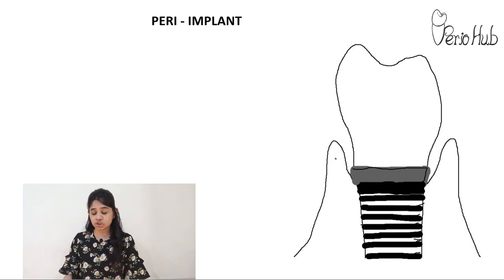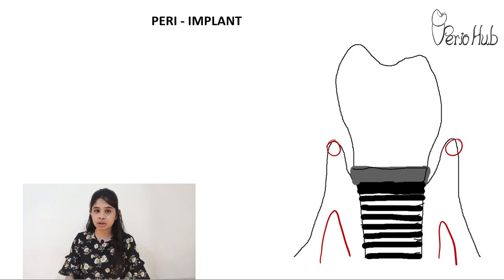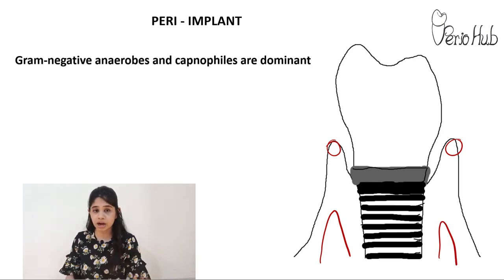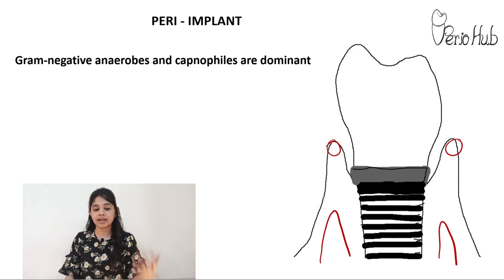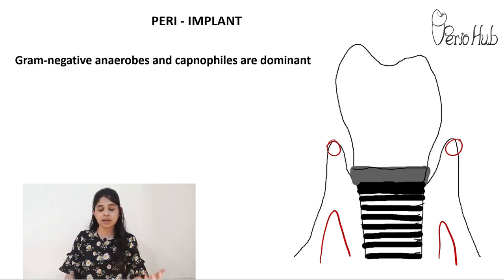Coming to peri-implant conditions: these are conditions wherein there is inflammation of the soft tissue associated with the implant along with destruction of the alveolar bone. Very similar to chronic periodontitis, peri-implantitis is dominated by gram-negative anaerobic capnophiles, with all the orange and red complex bacteria seen in abundance.